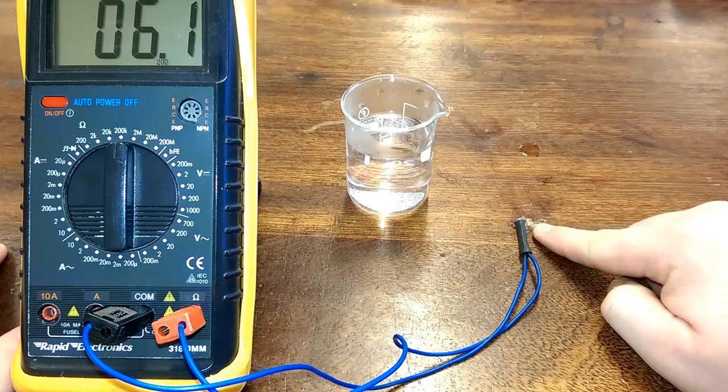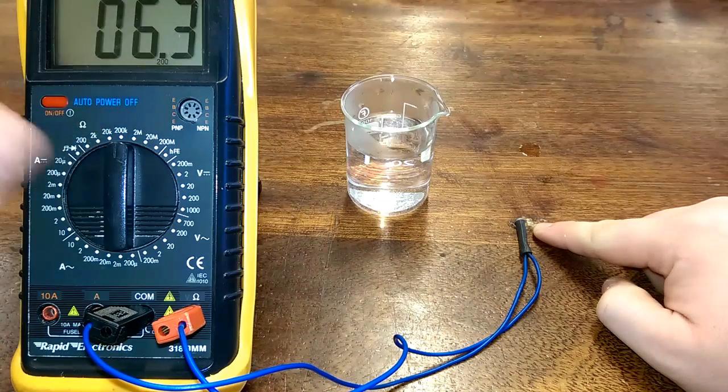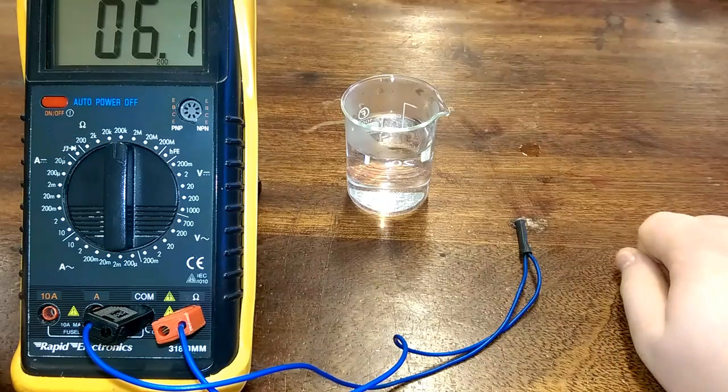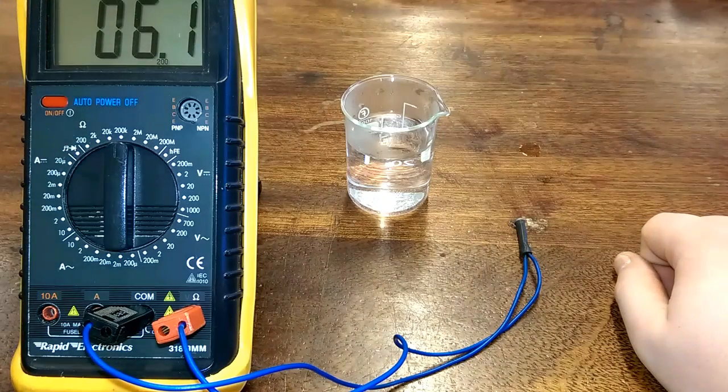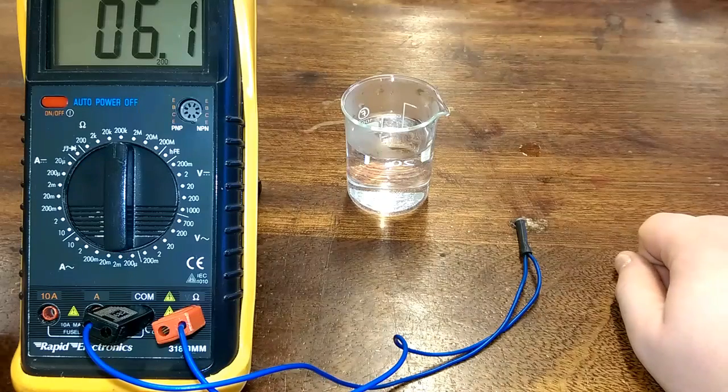So this is our thermistor, and all it is at the moment, my multimeter here is set to measure its resistance. And at the moment you can see that it is measuring 6k, 6,000 ohms.